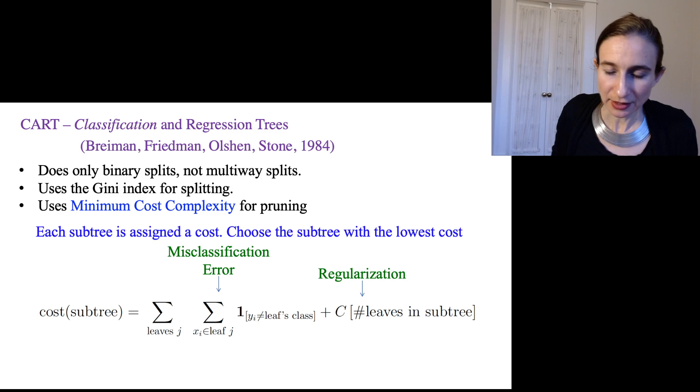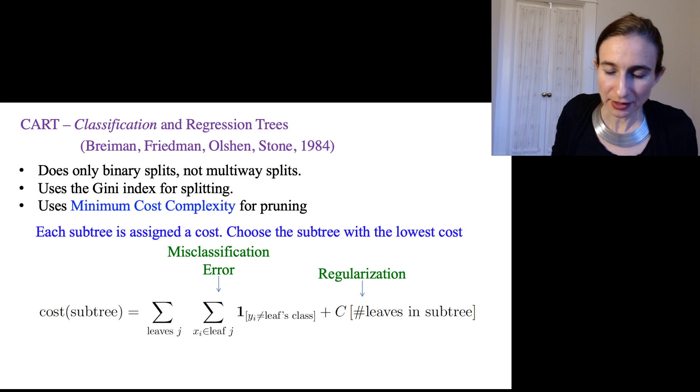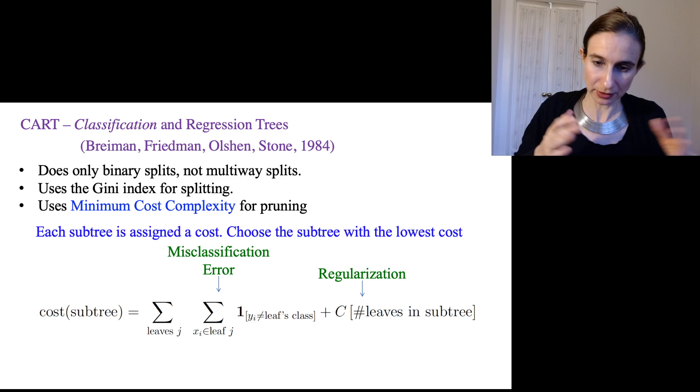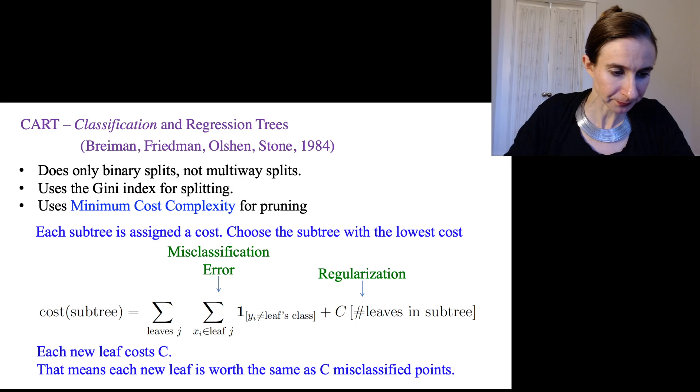And so you wonder, well, why don't we just optimize this whole thing from the very beginning? And that's a good question. And that's what we actually do in the more modern decision tree methods. But back in 1984, that was not possible. So they just used it as a pruning criteria.